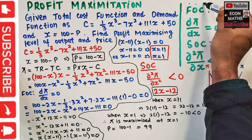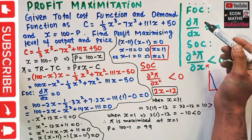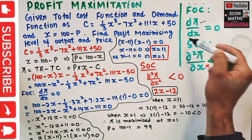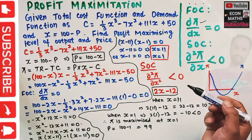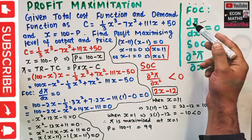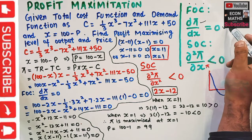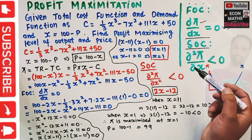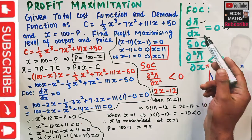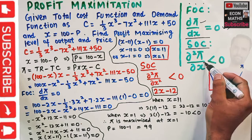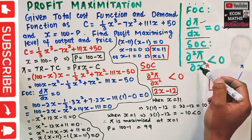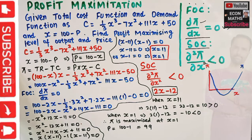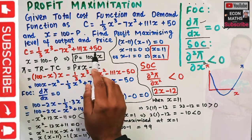The conditions for profit maximization are: the first order condition requires that the derivative of the profit function with respect to output should be equal to zero — that is, marginal profit should equal zero. The second order condition requires that the second derivative of the profit function with respect to X, d²π/dX², should be less than zero.